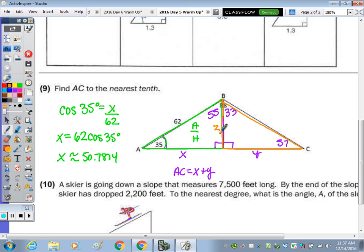So the sine of 35 degrees, because z would be directly opposite, is z over 62. So z equals 62 sine of 35 degrees, which is approximately 35.5617.